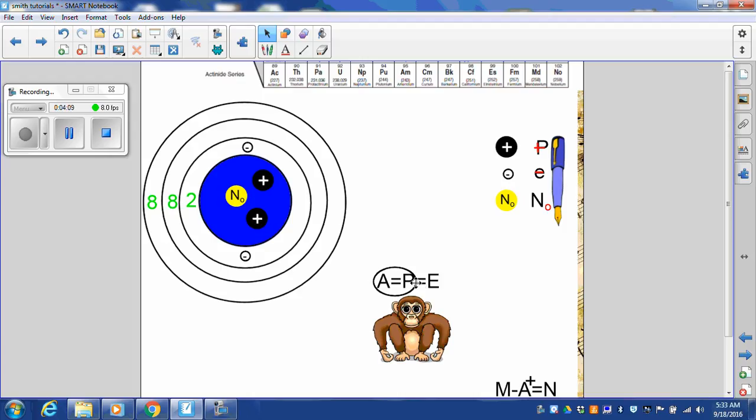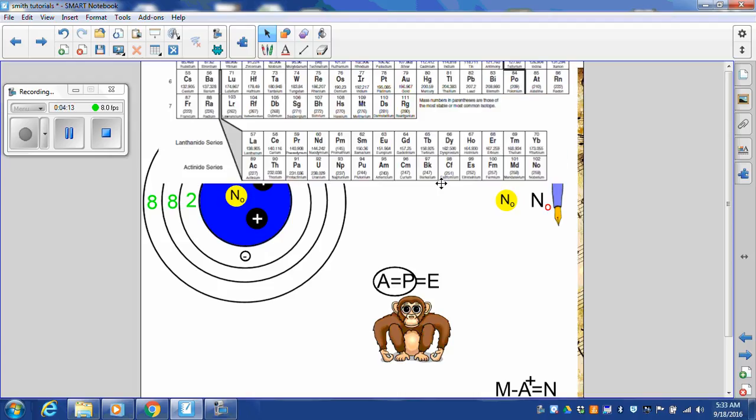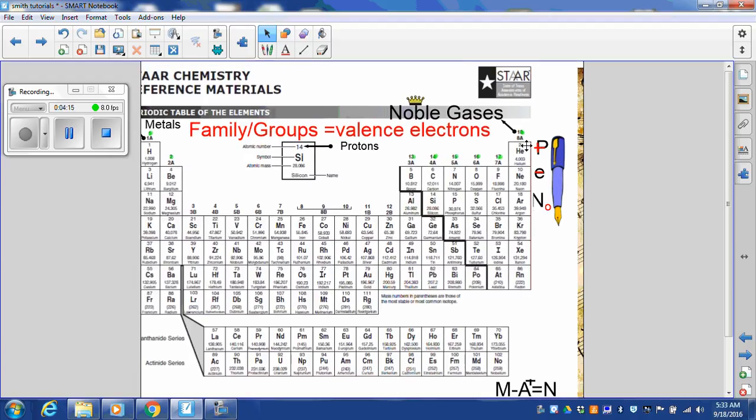A, P, E. If protons is two, the atomic number is two. And since it's on the periodic table, a neutral atom, it will have two electrons.